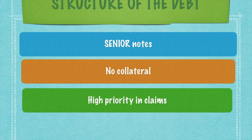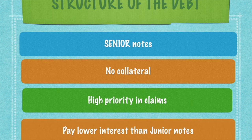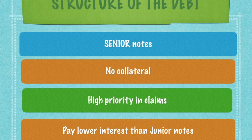Senior notes have very high priority in claims and pay lower interest than junior notes. Junior notes are notes which have a lower priority in claims. Because of the seniority of the notes issued by Reliance Industries, and because it is unsecured, it is called 'notes.' If it were secured, it would be called 'bonds.' Since it is unsecured, in the New York markets the term used is 'notes.'